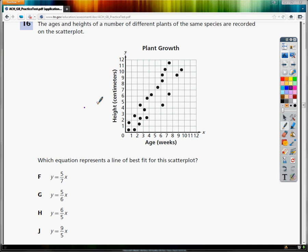The question says the ages and heights of a number of different plants of the same species are recorded on this scatter plot. Which equation best represents a line of best fit for this scatter plot?